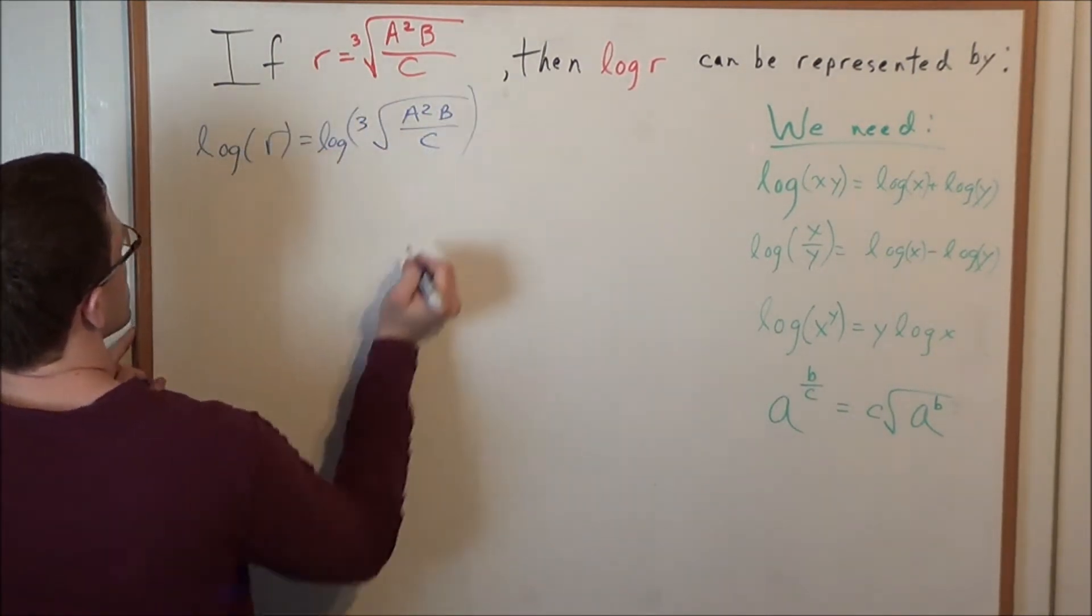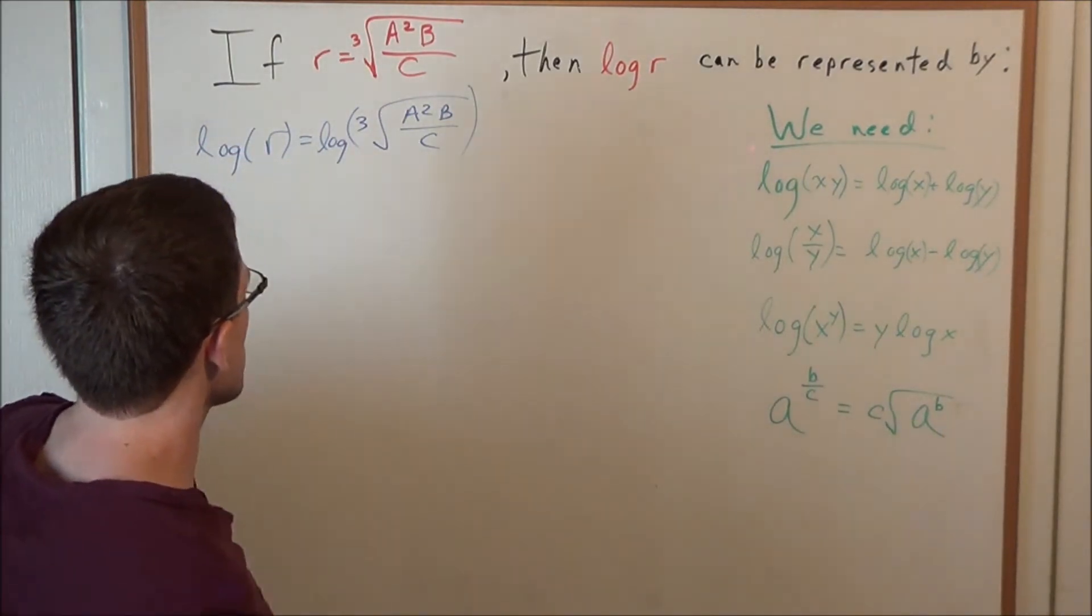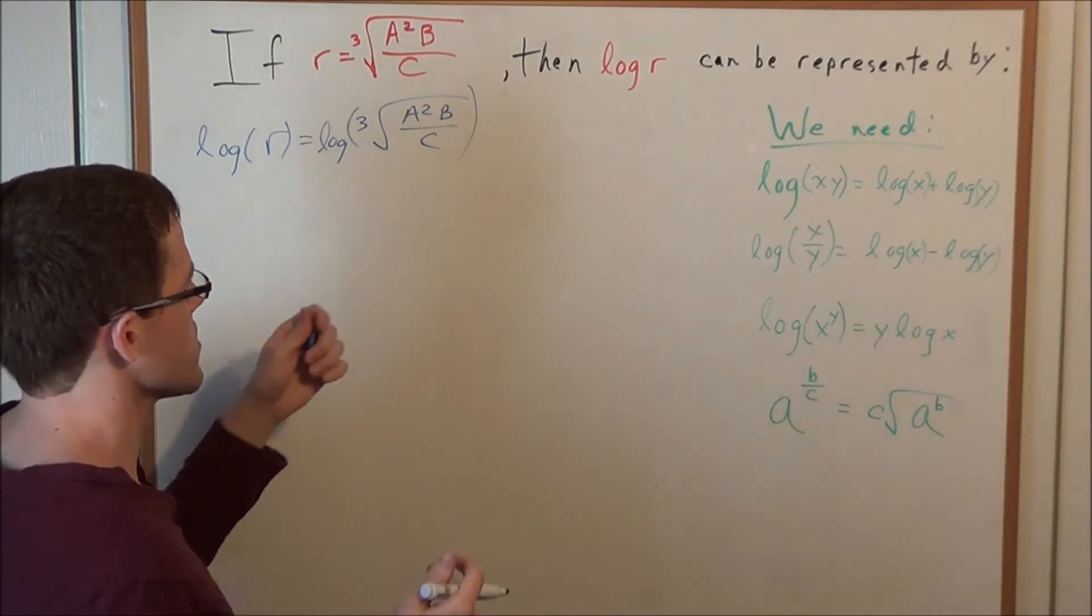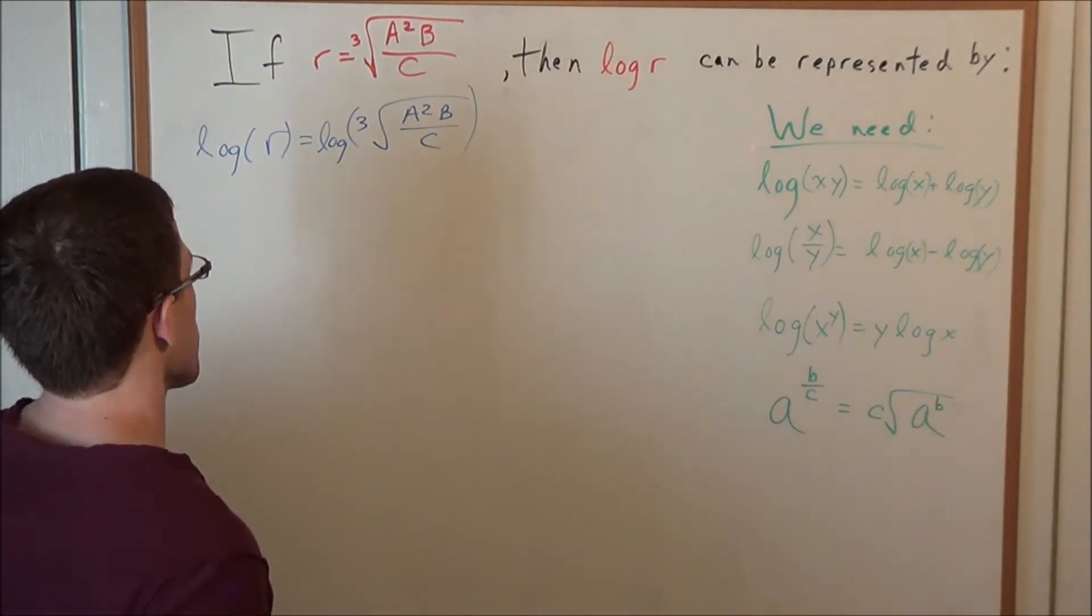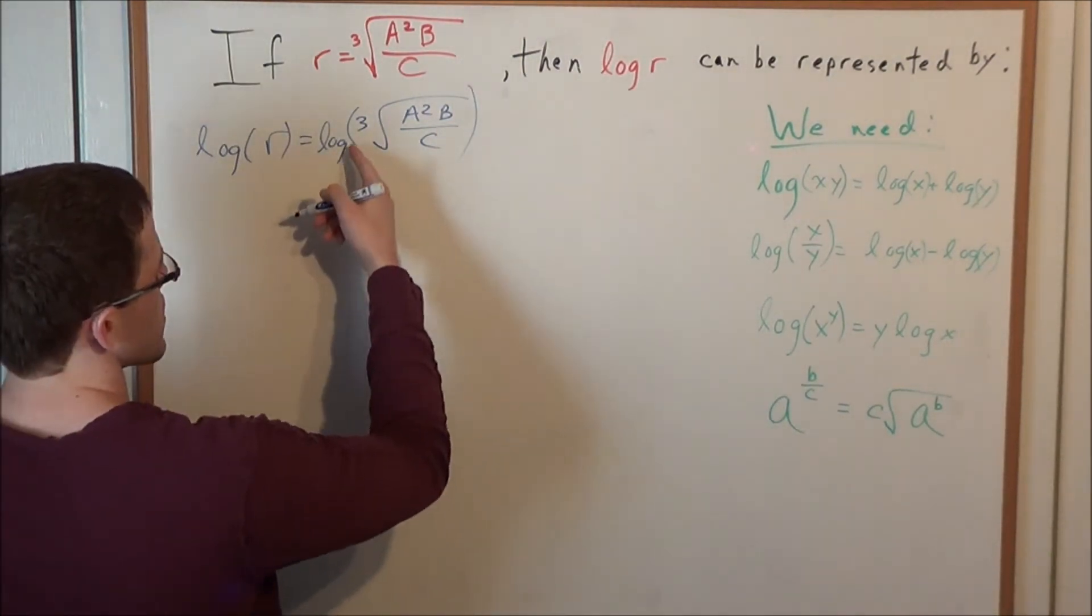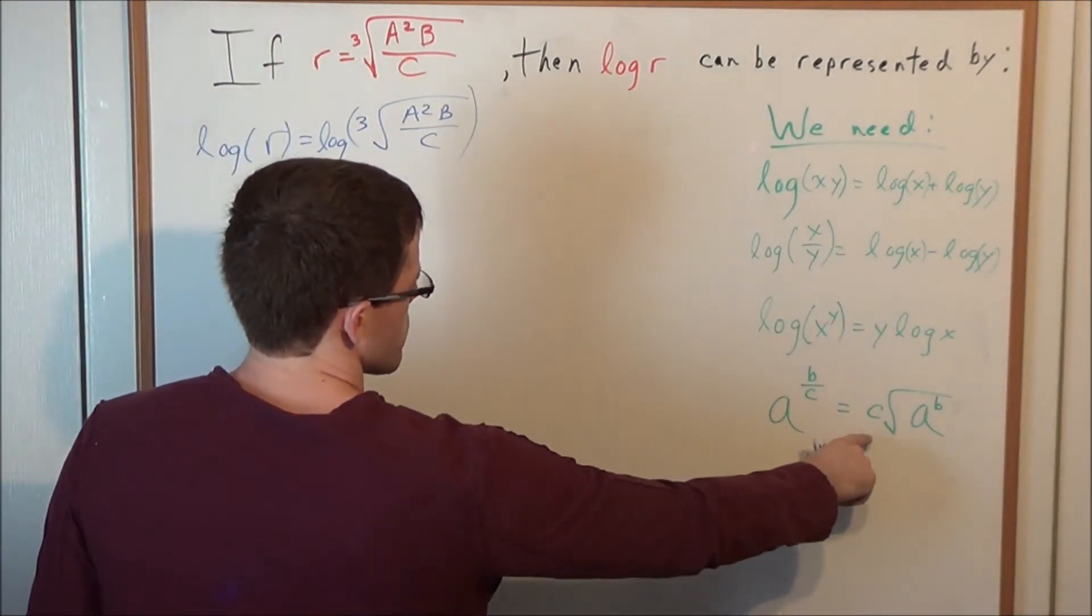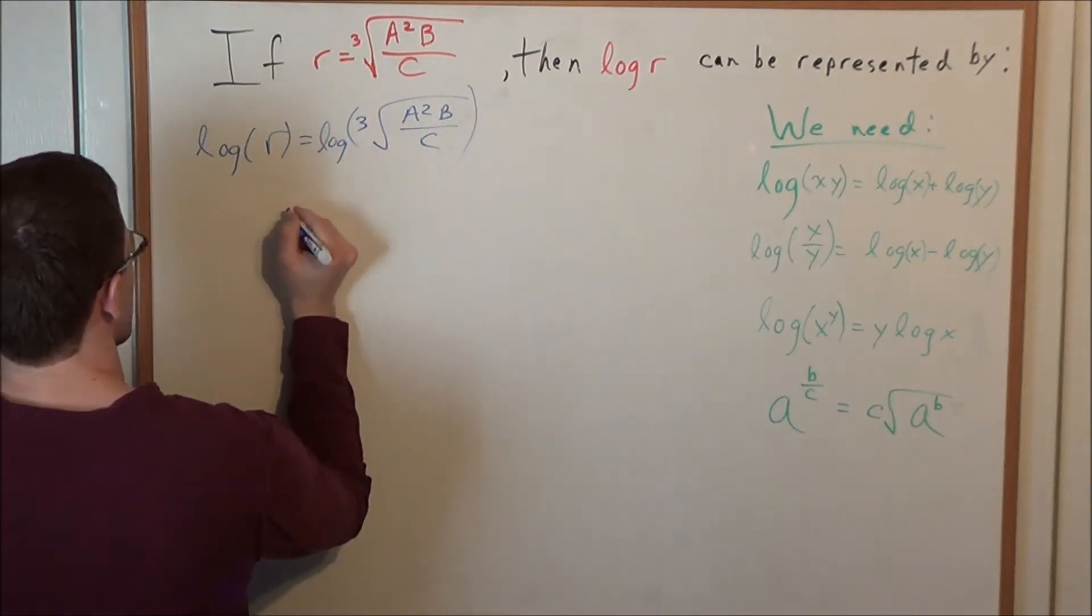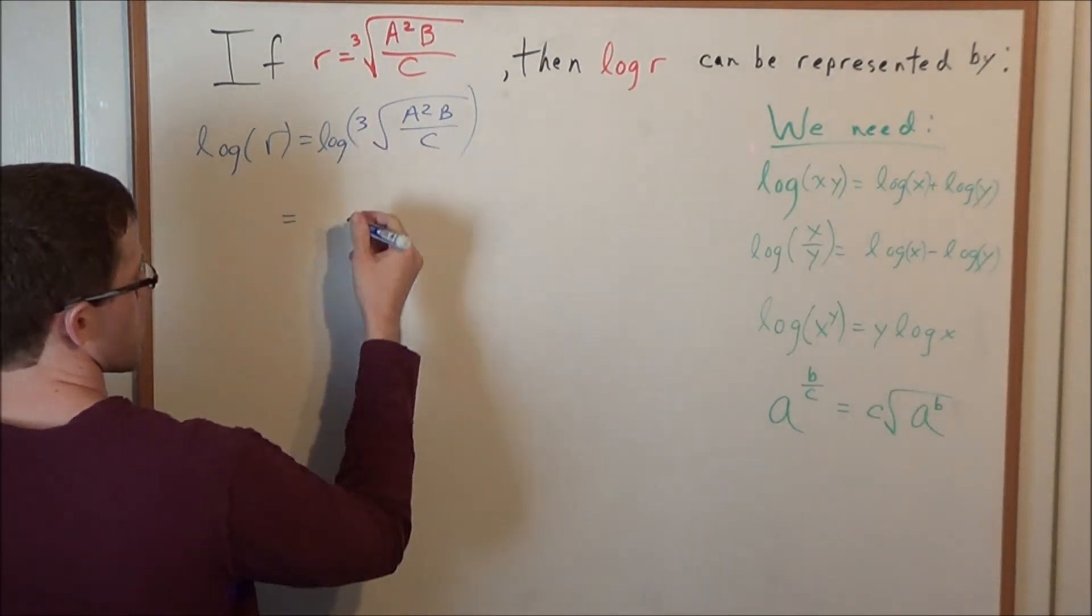And now notice on the left hand side, we have log of r. But on the right hand side, we need to simplify. We need to expand this using the various log properties. So let's go ahead and rewrite log of the cube root of... Instead of cube root, let's go ahead and put it in rational exponent form. So we're looking at, instead of log of the cube root, we're looking at log a squared b over c raised to the one-third.